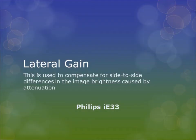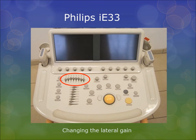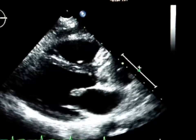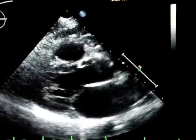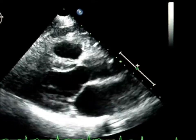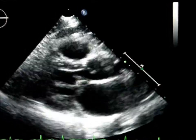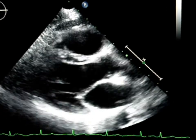Lateral gain is used to compensate for side-to-side differences in image brightness caused by attenuation. Much like TGC, each lateral gain bar affects the amount of gain across the screen vertically from left to right. The machine used to demonstrate this is the Philips IE33.